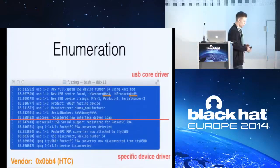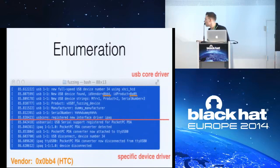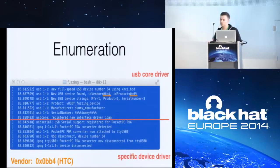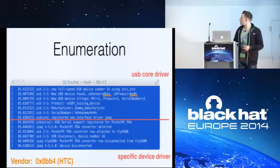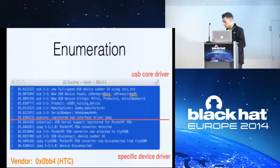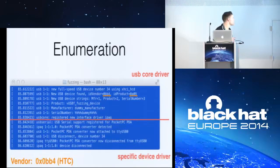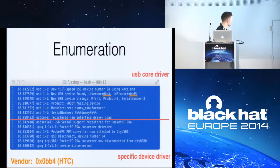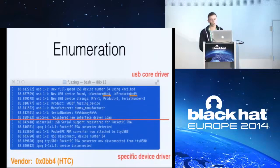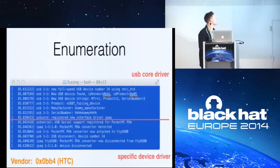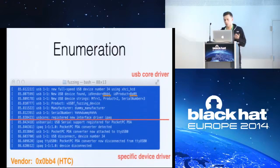If you're on Linux and you plug in a USB device and run the dmesg command, this is similar to what you'll see. Above the red line is the USB core driver output — there you can see information from the initial information exchange. There are two interesting fields: the ID vendor and ID product fields. You can resolve them — for example, to HTC with a Pocket PC sync — and the USB core driver selects, based on this information, the best fitting driver for these devices. Our goal is to try out all of them in the Linux kernel or in other operating systems.